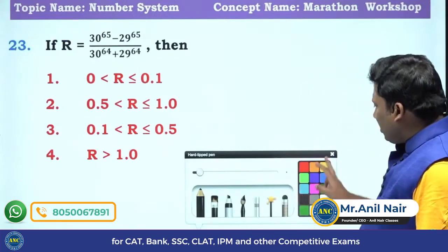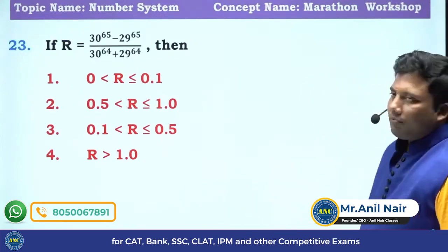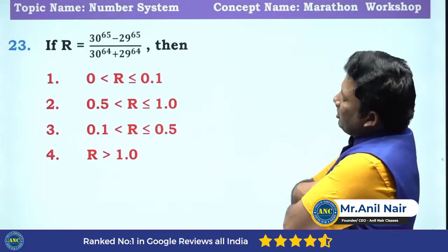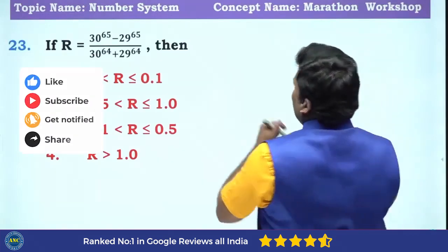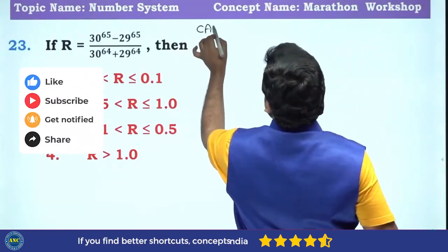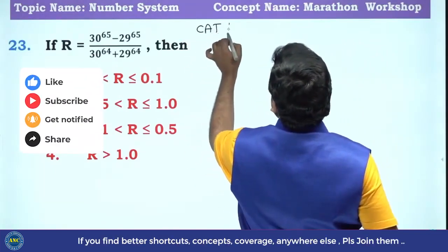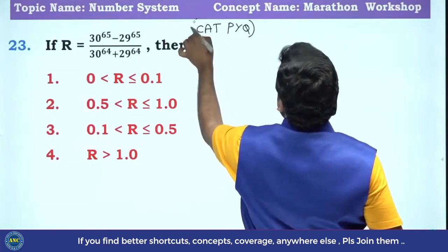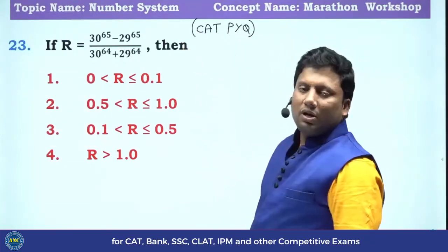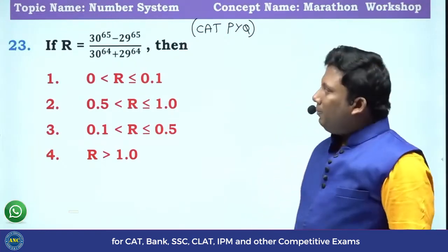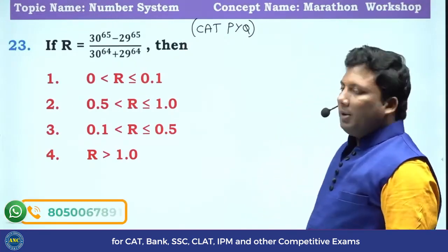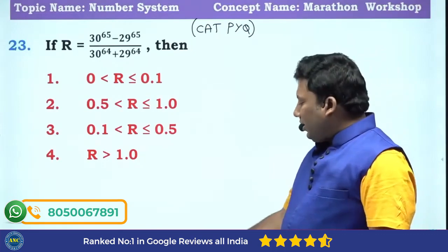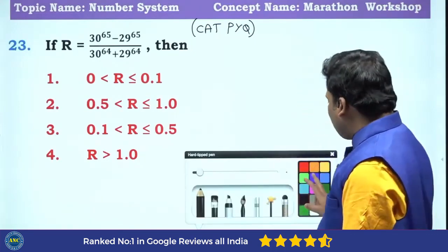Another question. R equivalent to 30 power 65 minus 29 power 65? This is a CAT previous year question. The expression is: 30 power 65 minus 29 power 65, divided by 30 power 64 plus 29 power 64.